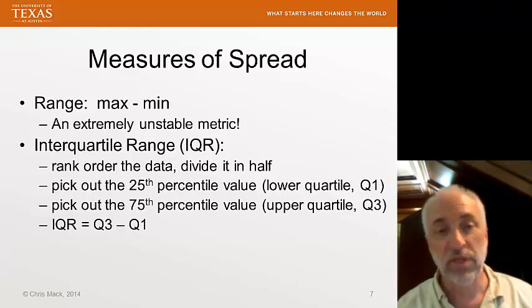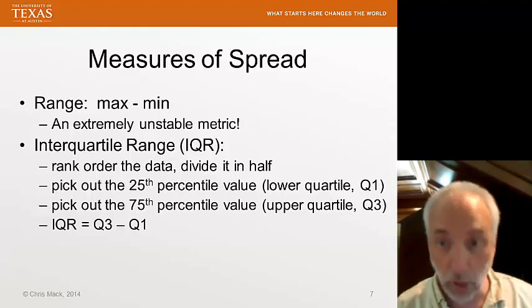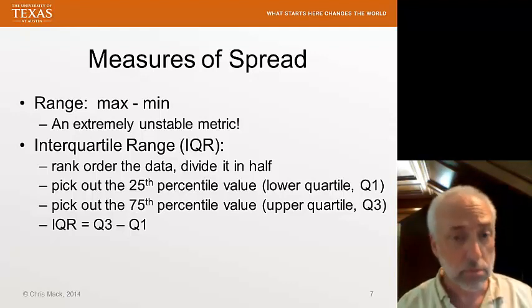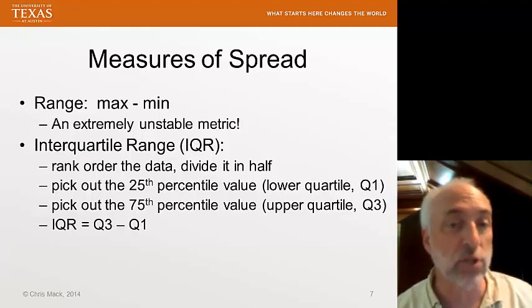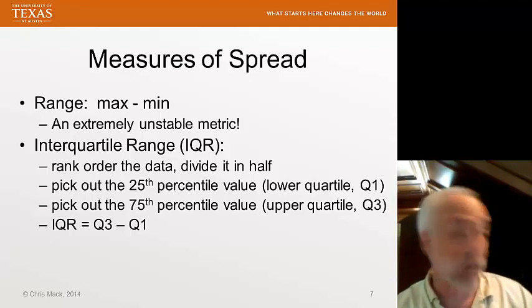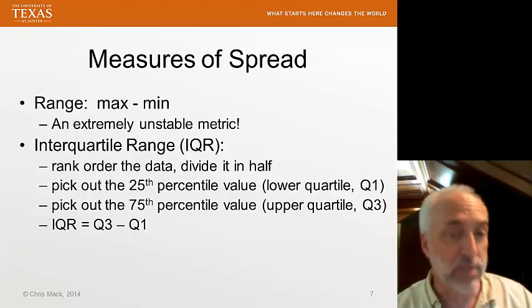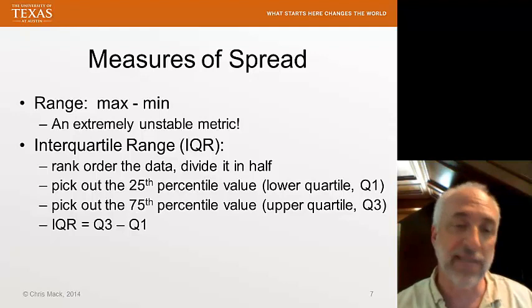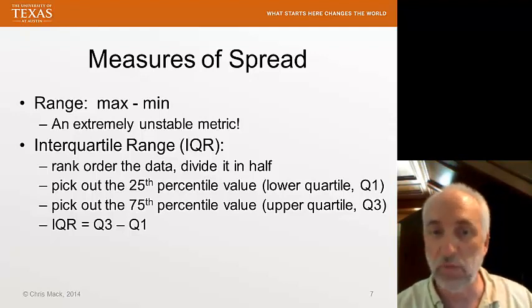Once you've got this 25th and 75th percentile values, which we call the lower quartile Q1 and the upper quartile Q3, the interquartile range is Q3 minus Q1. This is a very nice measure of spread. It is stable, it's robust. You can have quite a few bad data points, and the IQR still gives us a good statistical measure of spread.